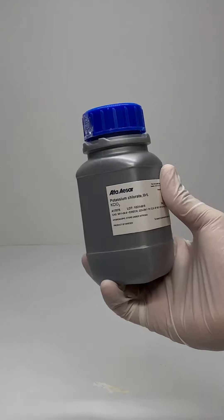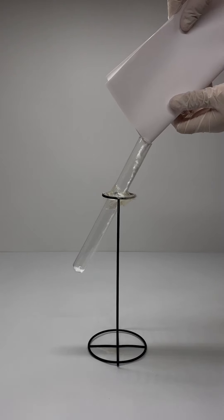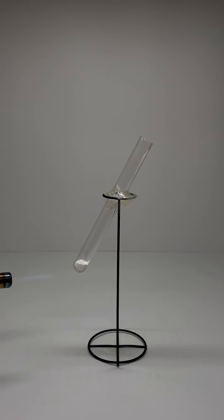Let's make gummy bear rockets. This is potassium chlorate, a white powder which is a strong oxidizing agent. Melting it causes it to break into KCl and oxygen gas. This oxidizes the sugar in the gummy bear and causes it to catch fire.